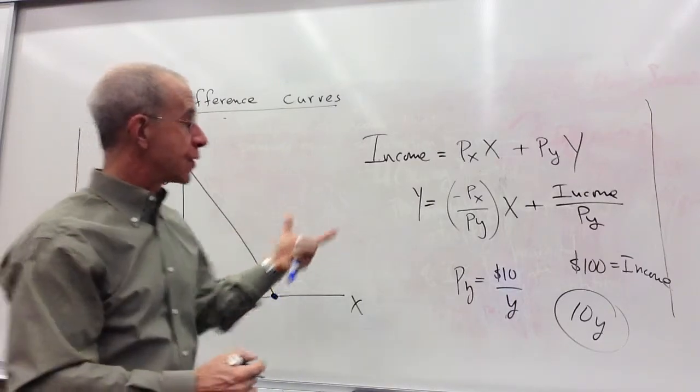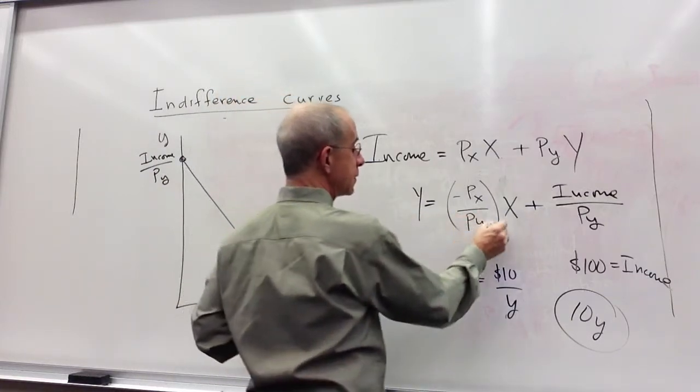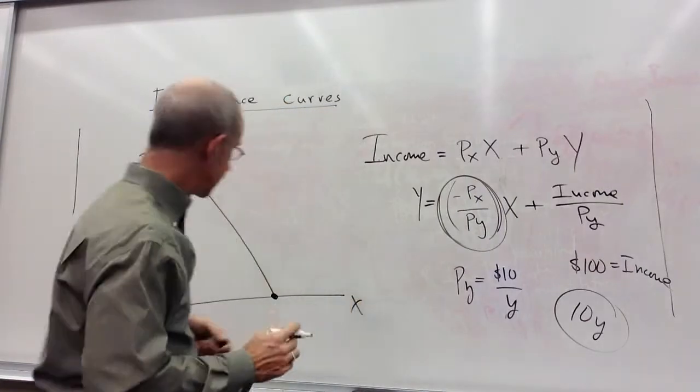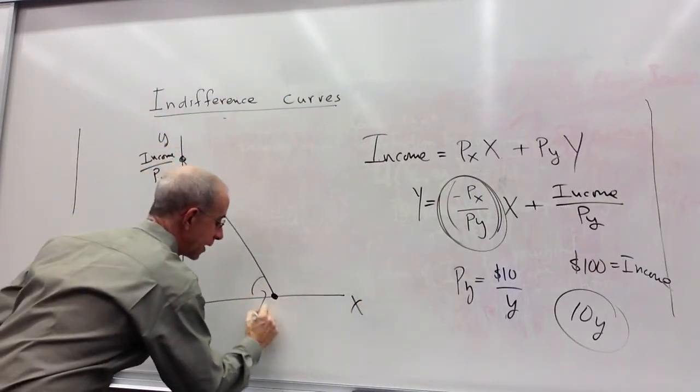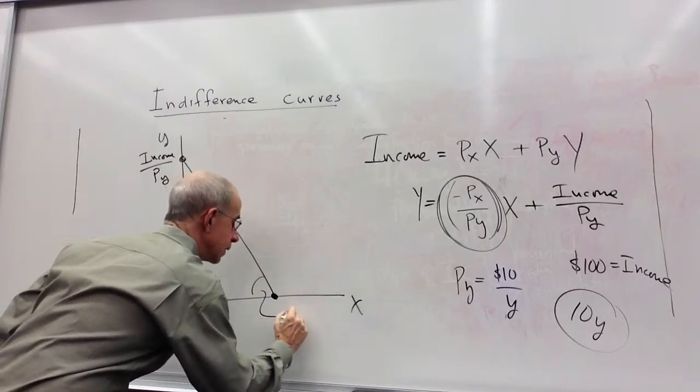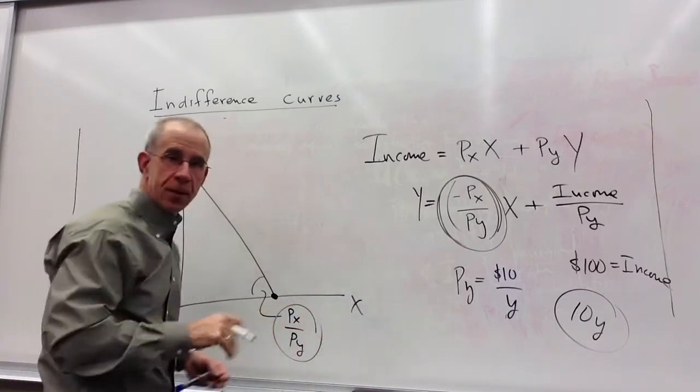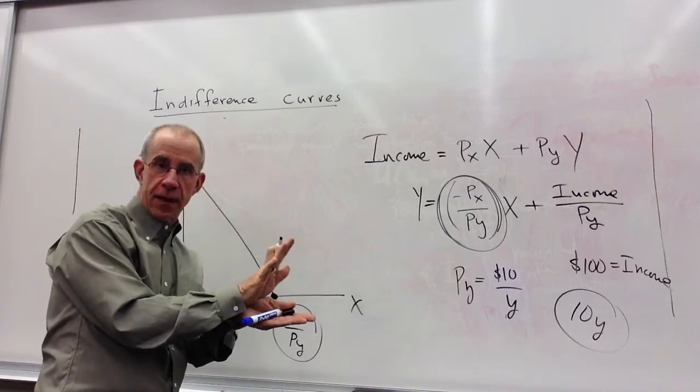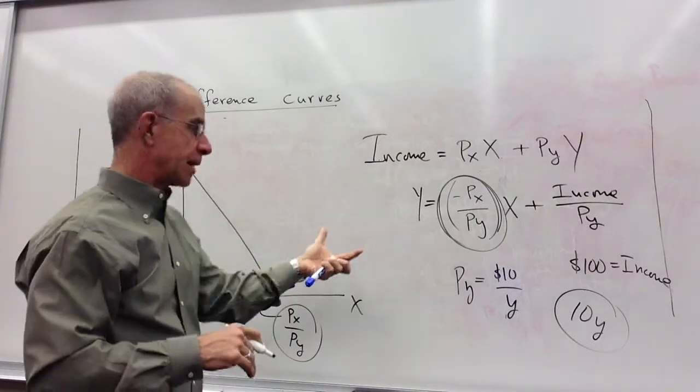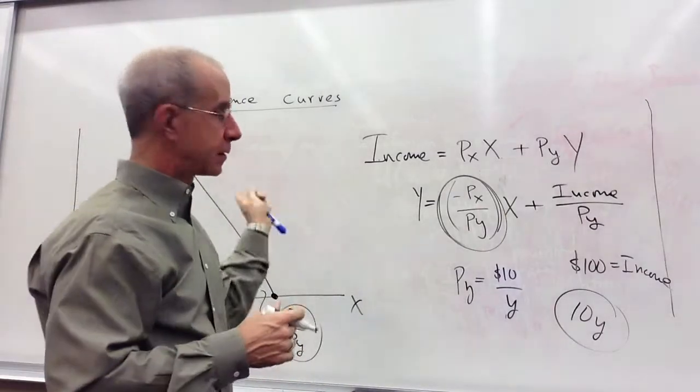The slope of this line is the relative price of x. It's essentially this angle. This angle is px over py. The steeper the angle, the higher the price of x. Mathematically, it's the absolute value of that slope.